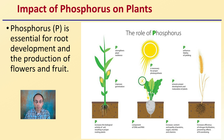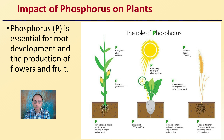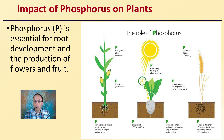First off, the impact of phosphorus on plants. Phosphorus, chemical or elemental symbol P, is essential for root development and the production of flowers and fruits. As a result, it does get a lot of attention from growers. Root formation and promotion of flowers and fruits are typical roles associated with phosphorus.